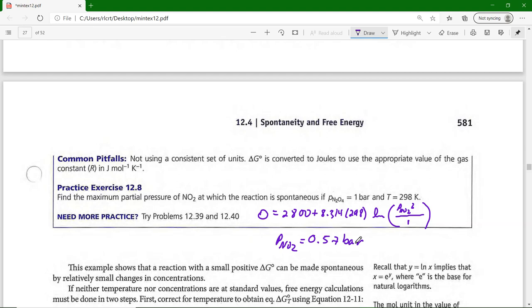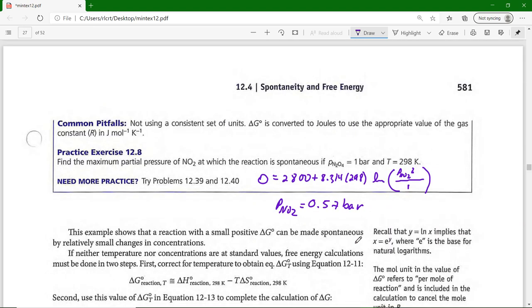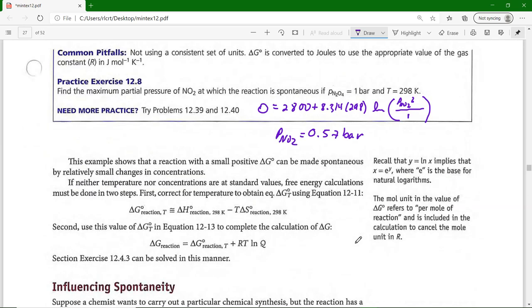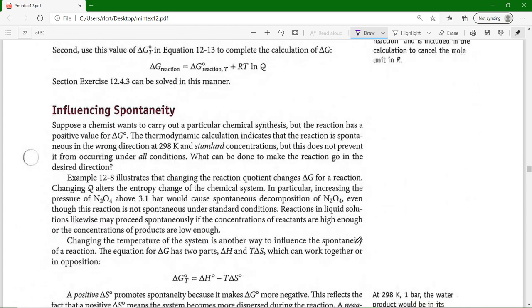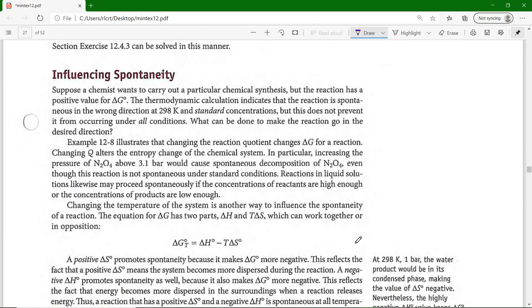The example shows that a reaction with a small positive ΔG° can be made spontaneous by relatively small changes in concentrations. We got this natural log term that's pretty powerful stuff. When neither temperature nor concentration are at standard values, free energy calculations must first be done using Equation 12.11 to get the ΔG°, and then once you get the ΔG° at a temperature, then get ΔG for that temperature. We can influence spontaneity by playing around with temperature, or by playing around with non-standard versus standard conditions.